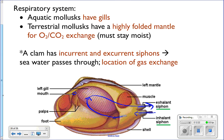A clam has incurrent and excurrent siphons — also called inhalant and exhalant. Water comes in through the inhalant siphon, passes over the gills where oxygen is exchanged and carbon dioxide is picked up, then exits out the exhalant siphon. The gills also filter out food; after filtering, two structures called palps form the food into a ball and pass it up to the mouth. That's where gas exchange takes place for a clam.